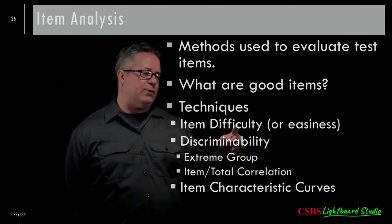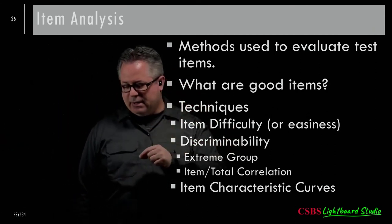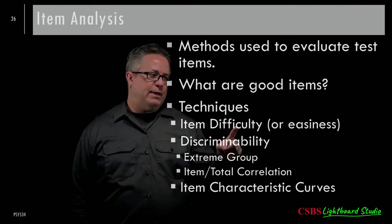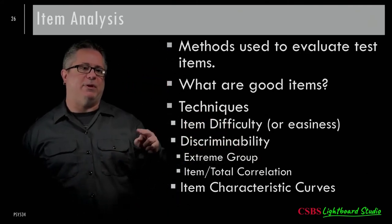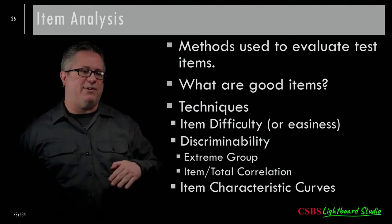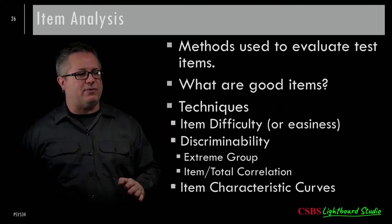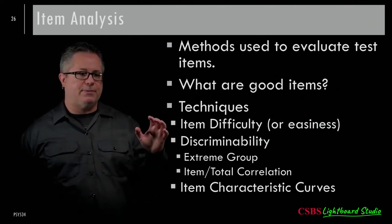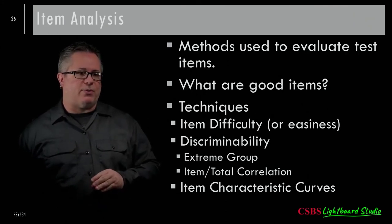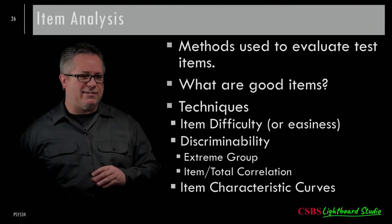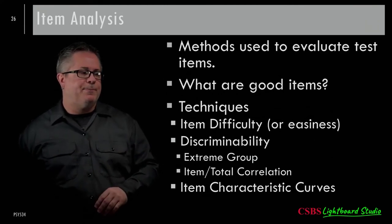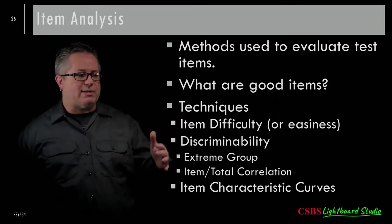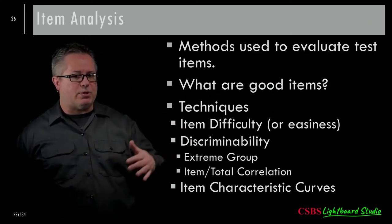The other thing we don't often think about is item difficulty. I want to embed this in your brain: think of it as item easiness rather than difficulty. The reason is counterintuitive — a higher score on item difficulty actually means the item is easier, and lower scores indicate harder items. A higher proportion of correct responses means an easier item.